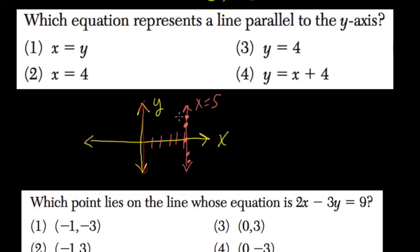So here we would just call this line x equals 5. So if you see a line that says x equals a number, like this one number 2, you would get a line parallel to the y-axis.